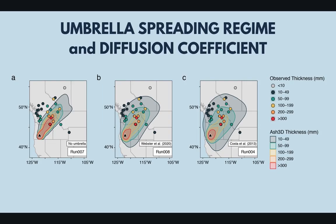However, there's still some debate as to which regime is fully appropriate, which I don't have time to get into now — but if anyone wants to talk about this in more detail, I'd be happy to do so later in the conference. The key takeaway is that we must add some computation of radial spreading of the umbrella cloud to more closely match the model simulations with what we see in the field.